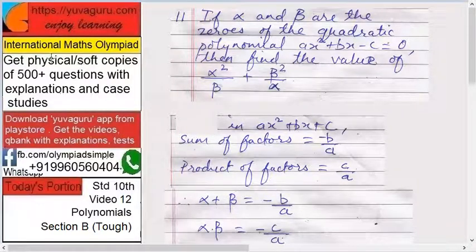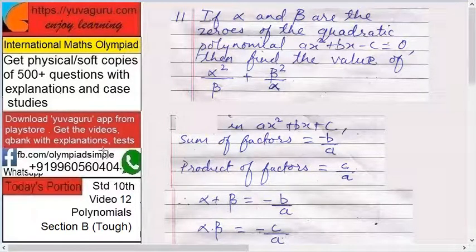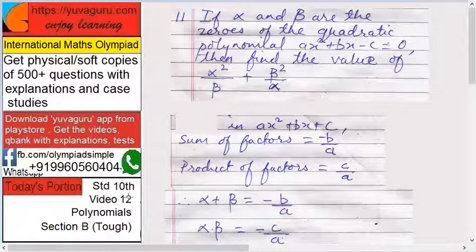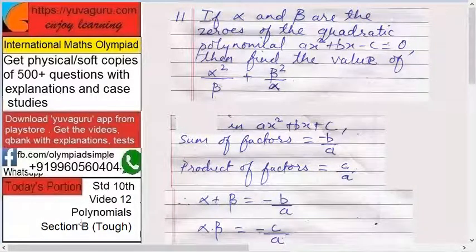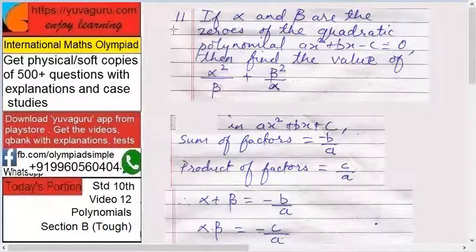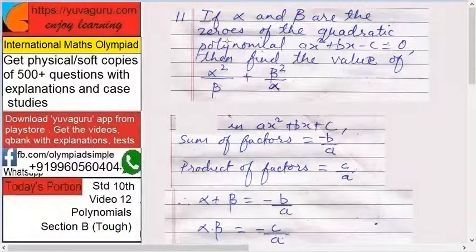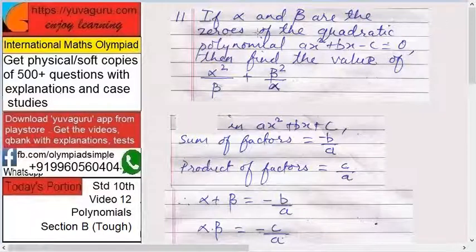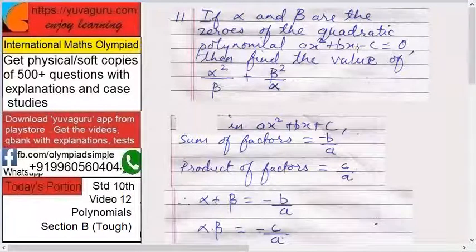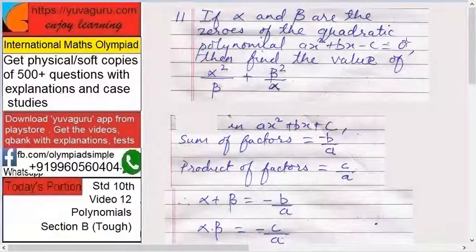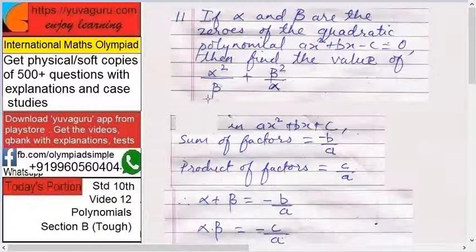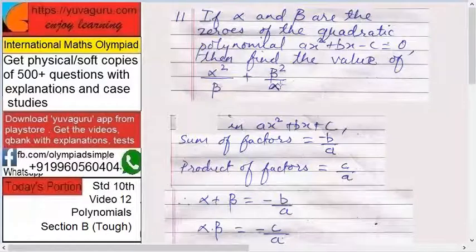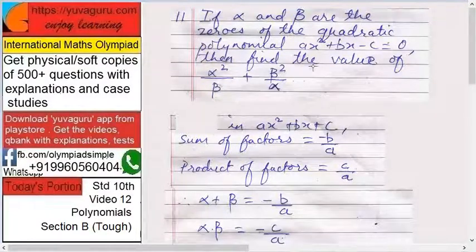Hi friends, welcome to International Maths Olympiad videos, Standard 10th, video number 12, Polynomials Section B (Tough). Let's start. If alpha and beta are the zeros (roots) of the quadratic polynomial ax² + bx - c = 0, then find the value of alpha²/beta + beta²/alpha.